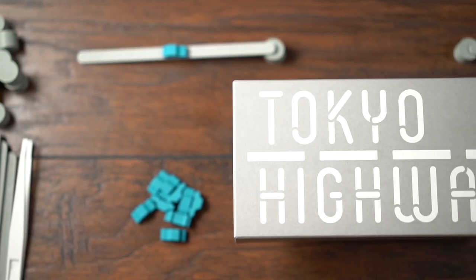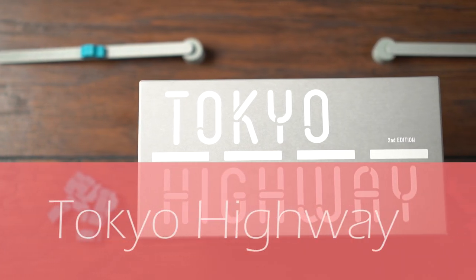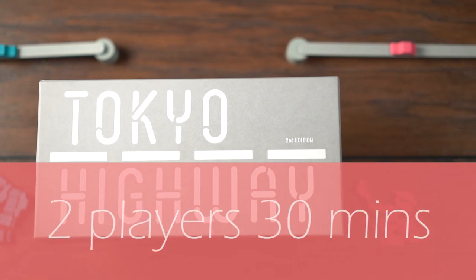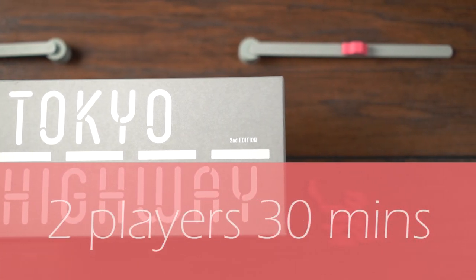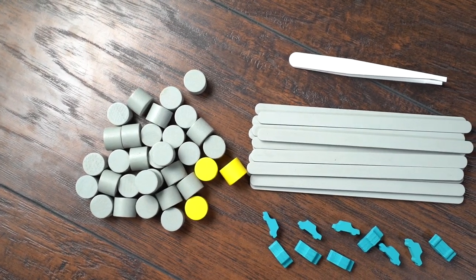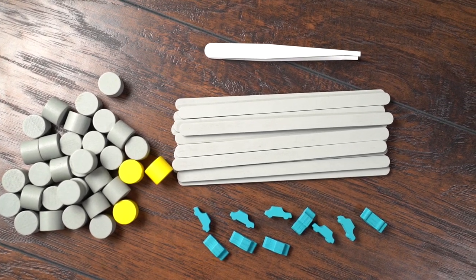It's up to you to build the Tokyo Highway. In this two-player game, you'll go head-to-head with an opponent in order to place your 10 cars first. In addition to the cars, each player begins with 15 roads, 30 gray pillars, and three yellow pillars.